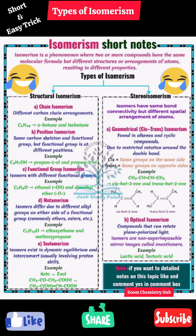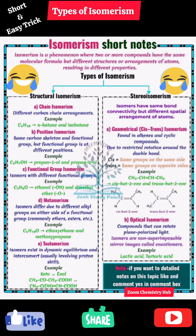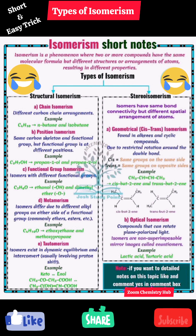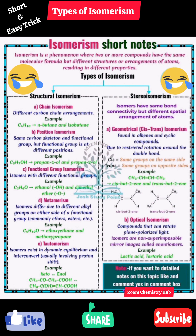The first type is chain isomerism, which involves different carbon chain arrangements. The second type is position isomerism, where compounds have the same carbon skeleton and functional group, but the functional group is at different positions.